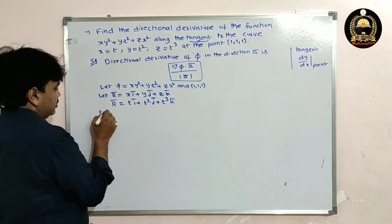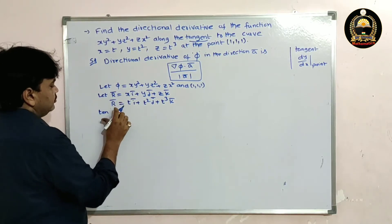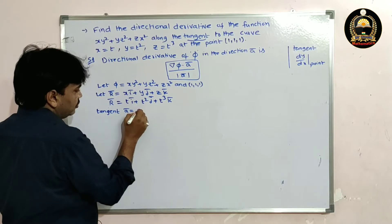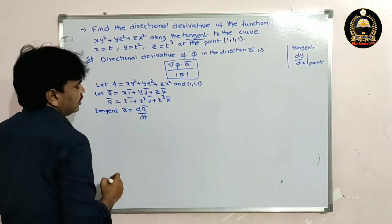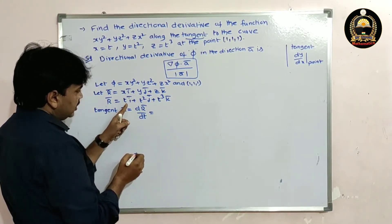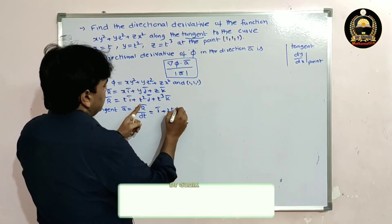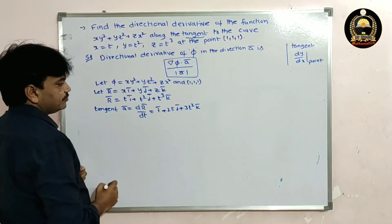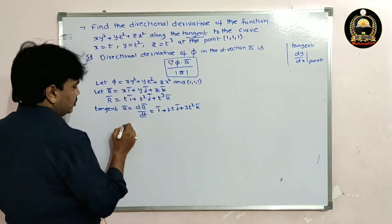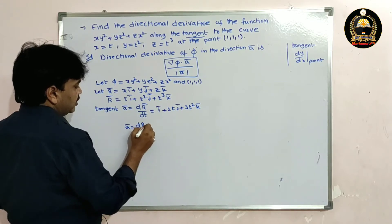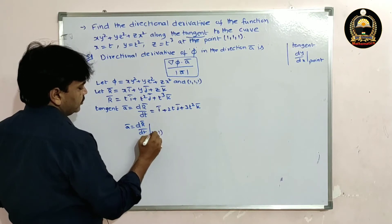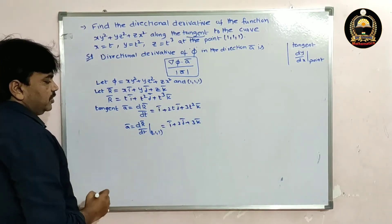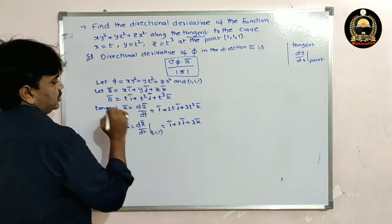The tangent vector a̅ is dr̅/dt. Differentiating, we get dr̅/dt = i + 2tj + 3t²k. At the point (1, 1, 1), where t = 1, we get a̅ = i + 2j + 3k.